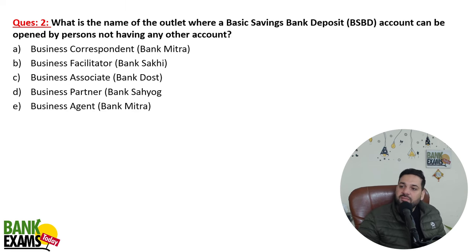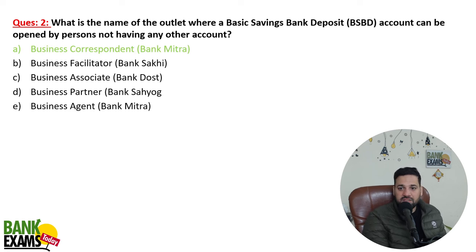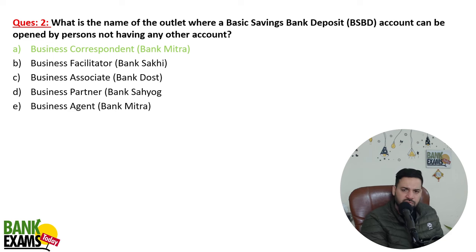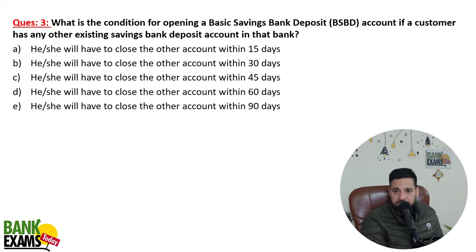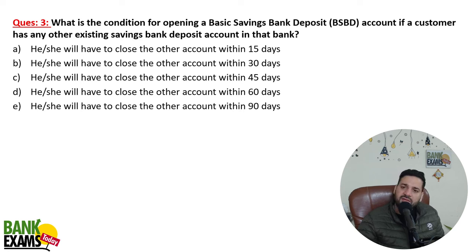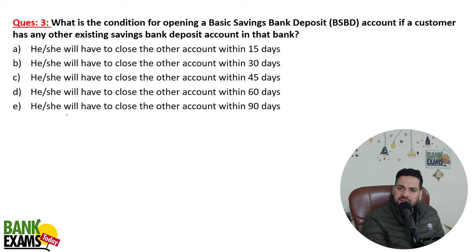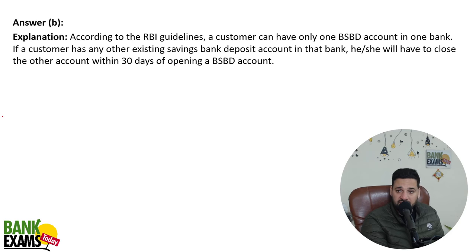What is the name of the outlet where a BSBDA account can be opened by a person not having any other account? It can be opened at a Bank Mitra outlet — a bank business correspondent or bank business outlet. The condition for opening a BSBDA account is that it's a zero balance account. If you have any other savings bank account in any other bank, you need to close that within 30 days of opening the BSBDA account.